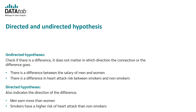We also distinguish whether a hypothesis is directed or undirected, which plays a major role in interpreting results. Undirected hypotheses test whether there is a difference without specifying the direction — for example, there is a difference between the salary of men and women, but it is not mentioned which direction. Or there is a difference in heart attack risk between smokers and non-smokers, but it doesn't say which direction. Directed hypotheses also indicate the direction — for example, men earn more than women, or smokers have a higher risk of heart attacks than non-smokers.